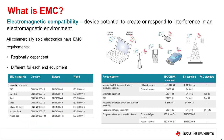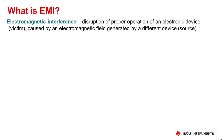By understanding the sources of electromagnetic energy in your design and the response of receptor or victim components in your system, as well as the paths that couple them, you can optimize your design for required EMC performance levels and for EMC performance testing.